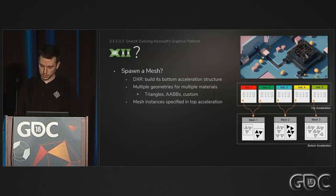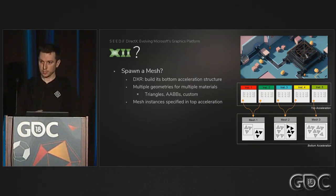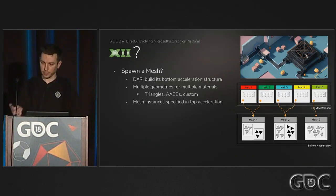Once a mesh moves, we update its instance matrix in the top-level acceleration structure. We do this for all the meshes — all the little guys you saw in the video that move around — every frame. It's really fast; it's just pushing new matrices, so you're not rebuilding BVHs like you do in the bottom-level acceleration structure.